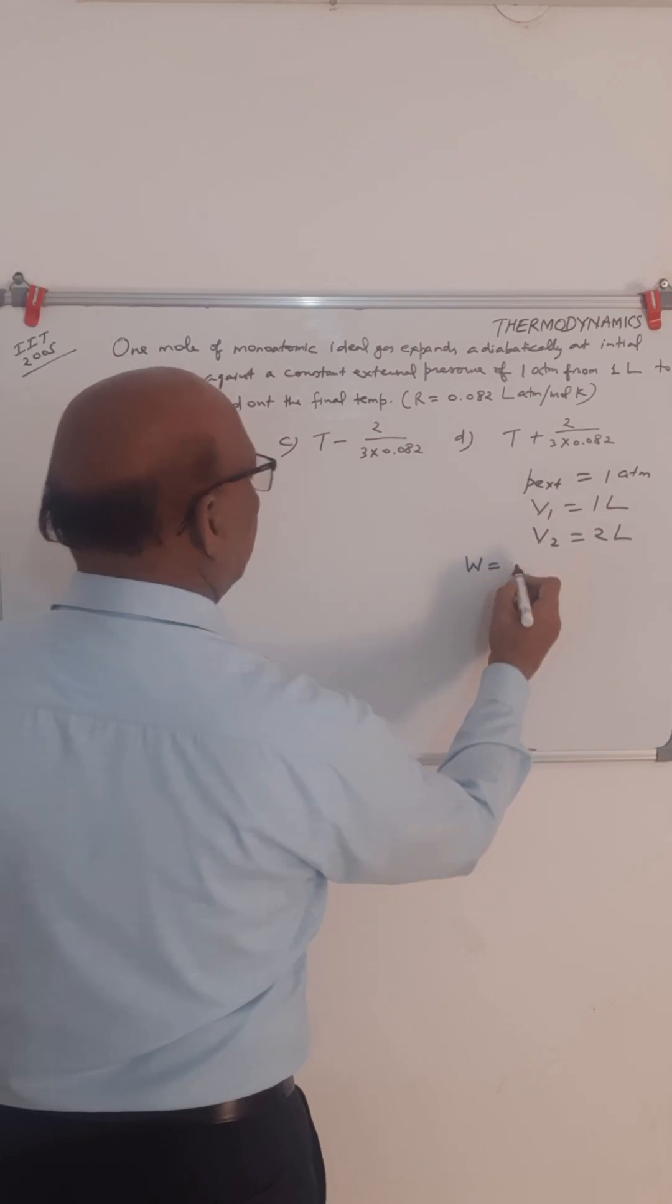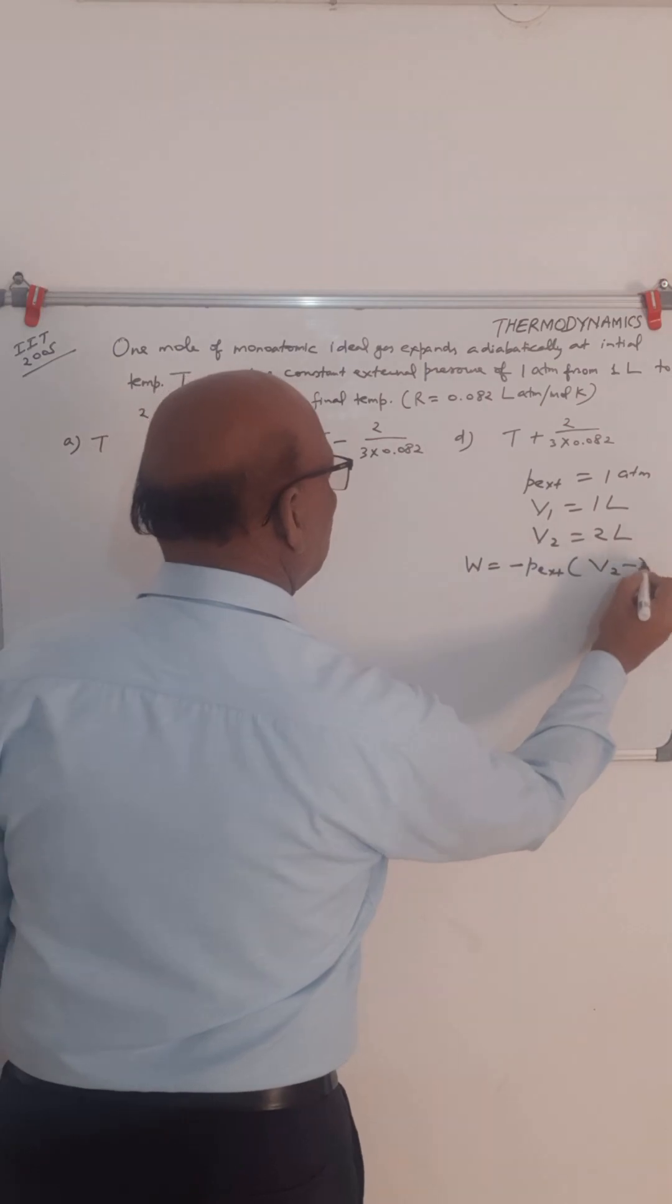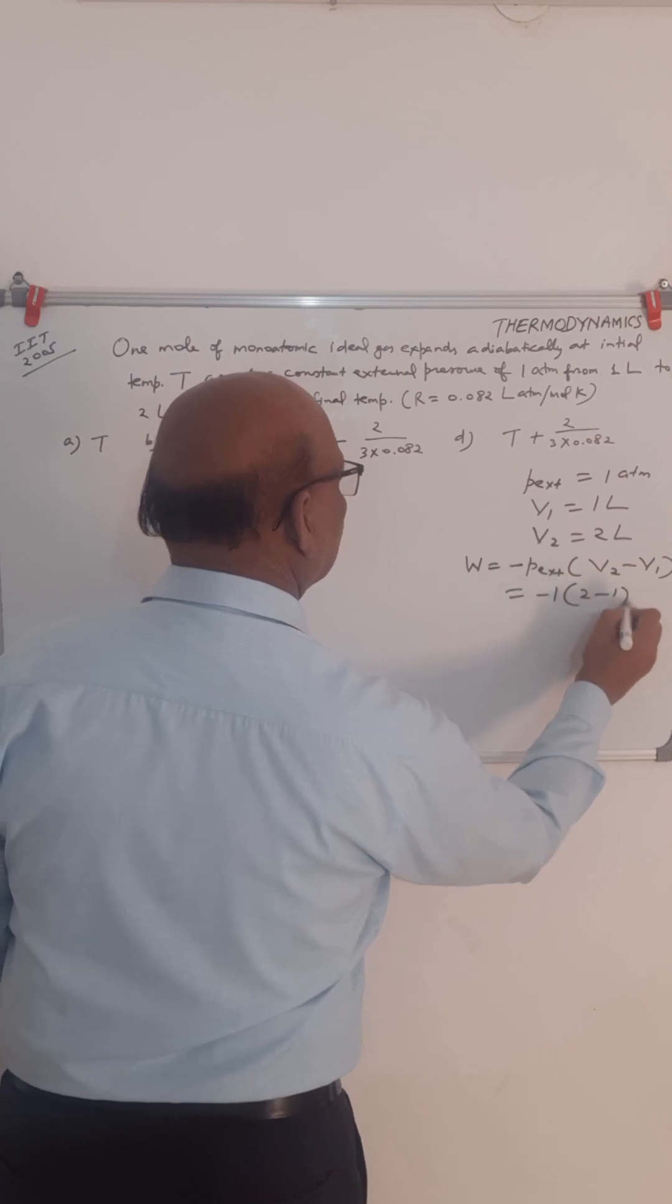So the work done by the gas against constant external pressure is given by minus P external into V2 minus V1. So this will be minus 1 into 2 minus 1, that is minus 1 liter atmosphere.